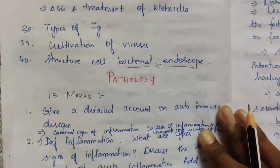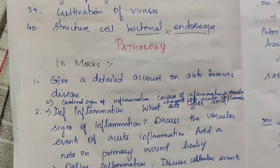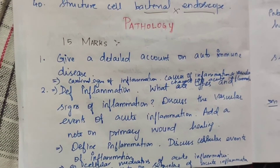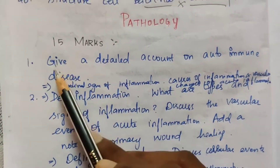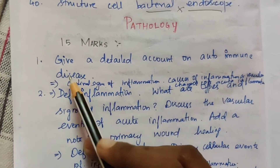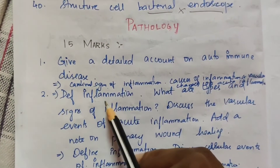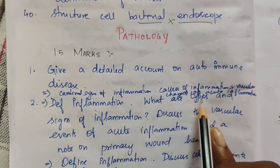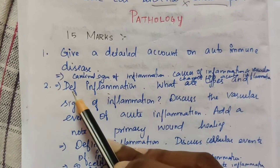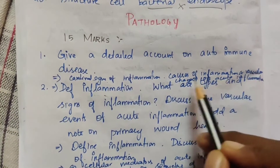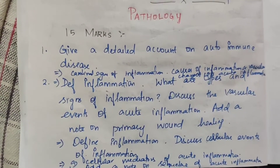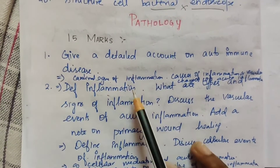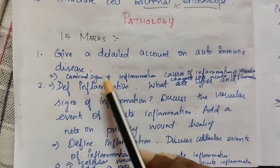Next, the pathology questions. First, 15-mark questions. The first pathology question: give a detailed account on autoimmune disease. The second topic is inflammation related. Cardinal signs of inflammation, causes of inflammation, and vascular changes of acute inflammation are important. Vascular changes and cell changes are the most important subtopics. Define inflammation, what are the types and signs of inflammation?